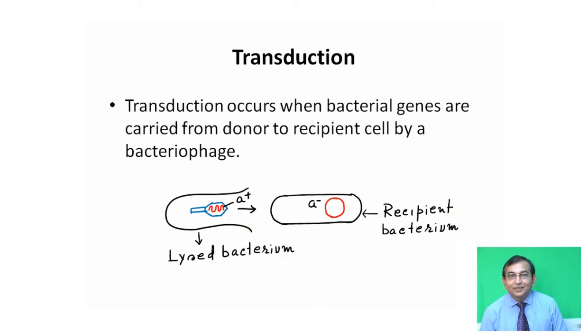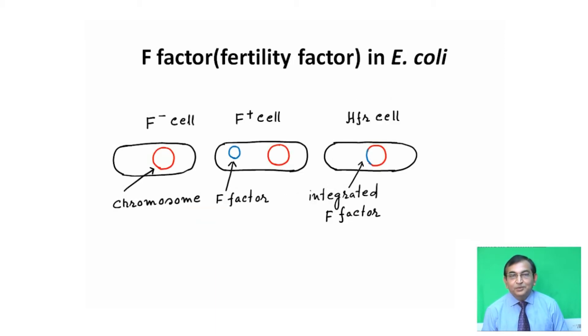Another type of gene transfer is transduction. Transduction occurs when bacterial genes are carried from donor to recipient cell by bacteriophage. The bacteriophage is involved in the transfer of DNA from donor to recipient bacteria. There are three ways by which genes are transferred: transformation, conjugation, and transduction.